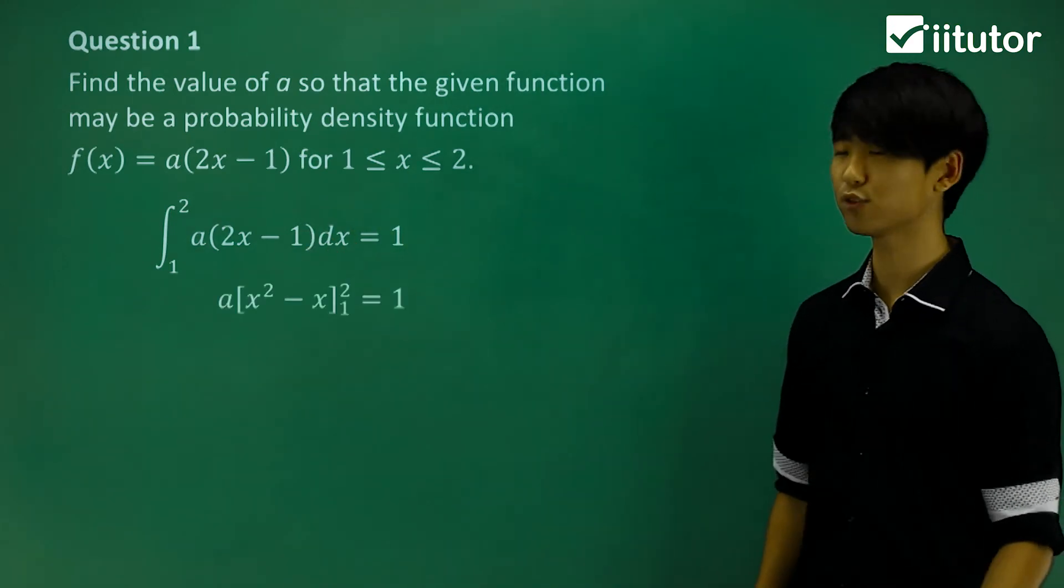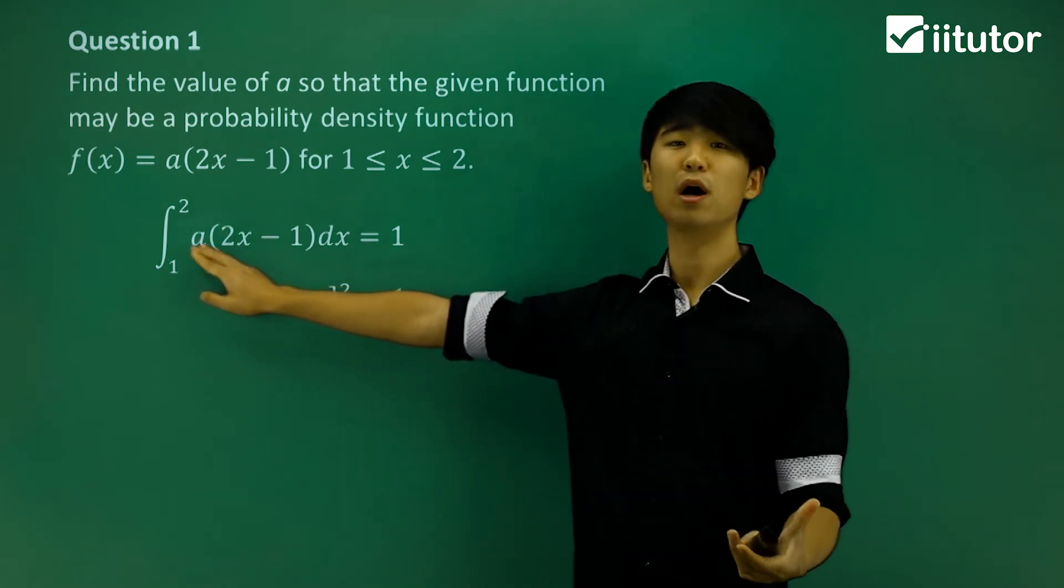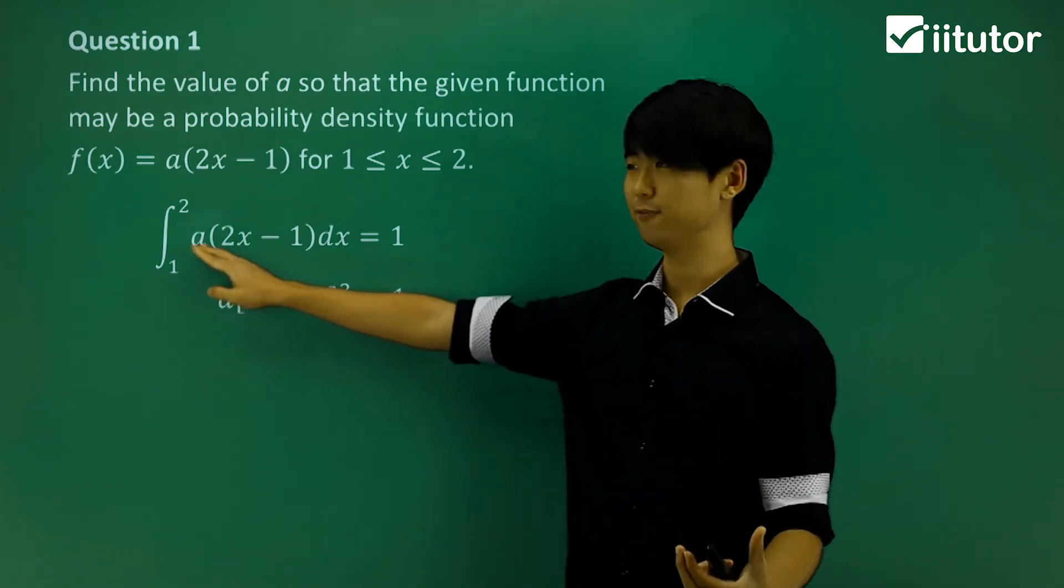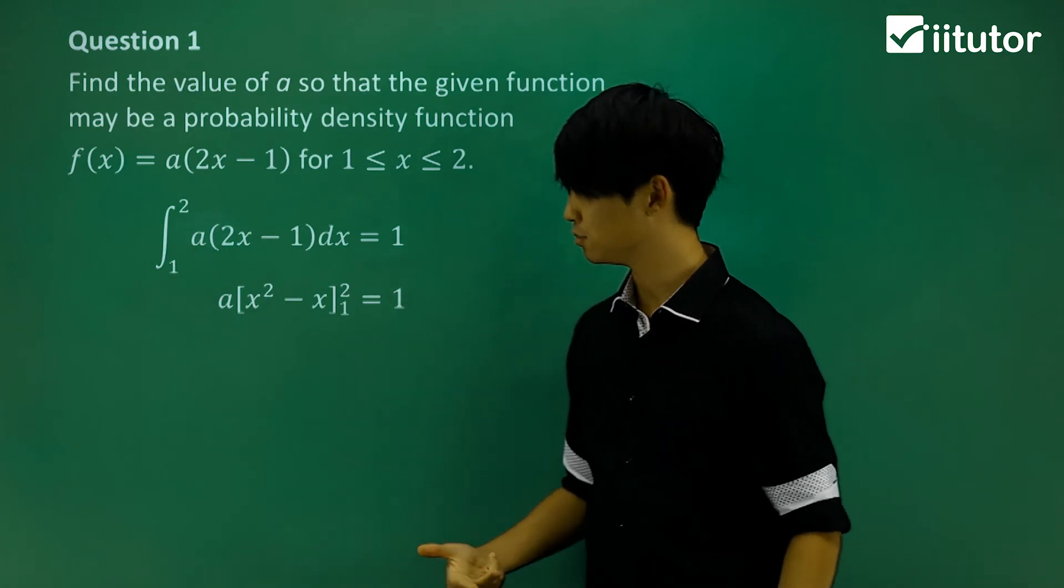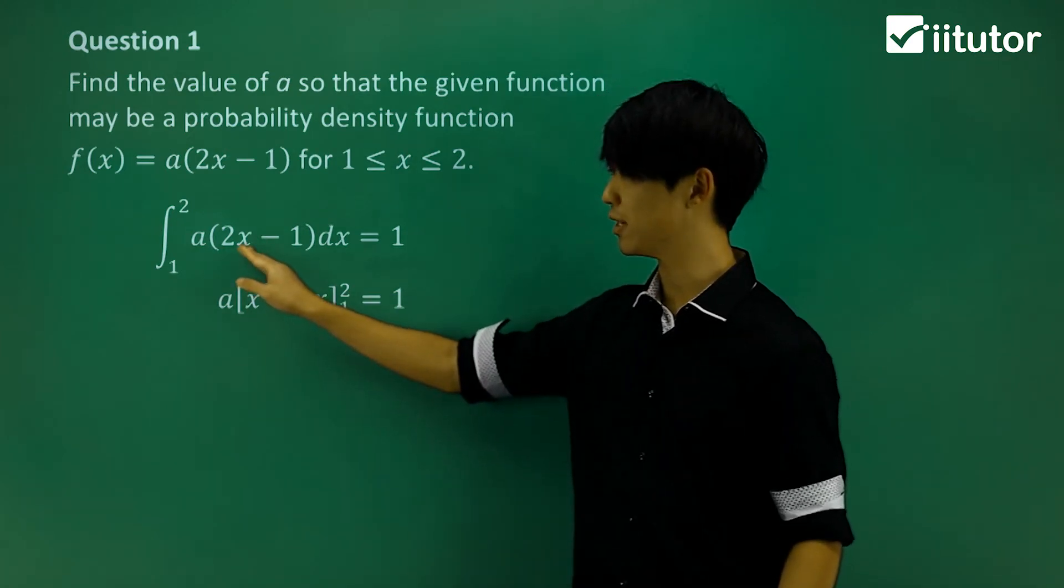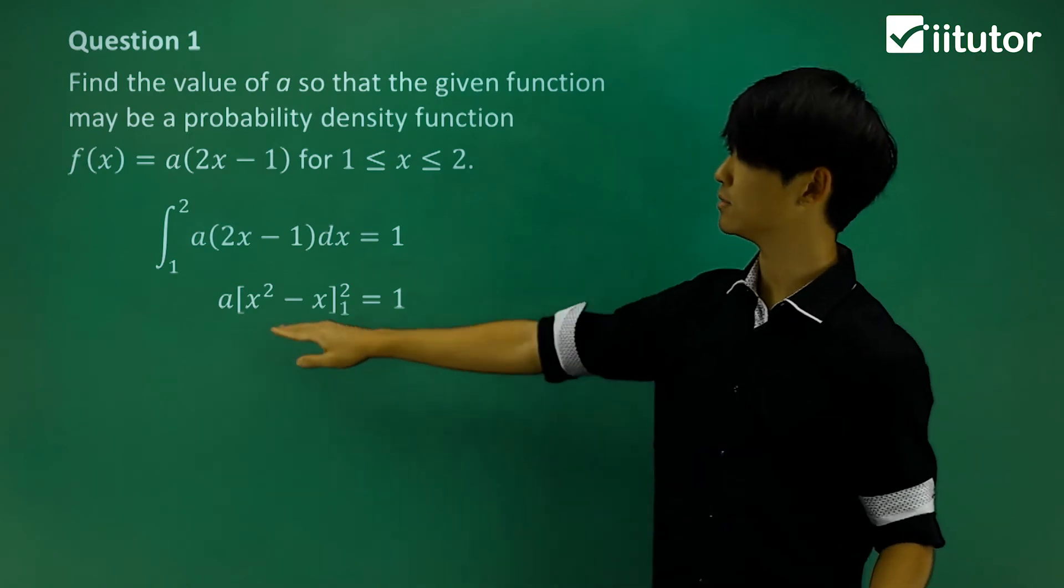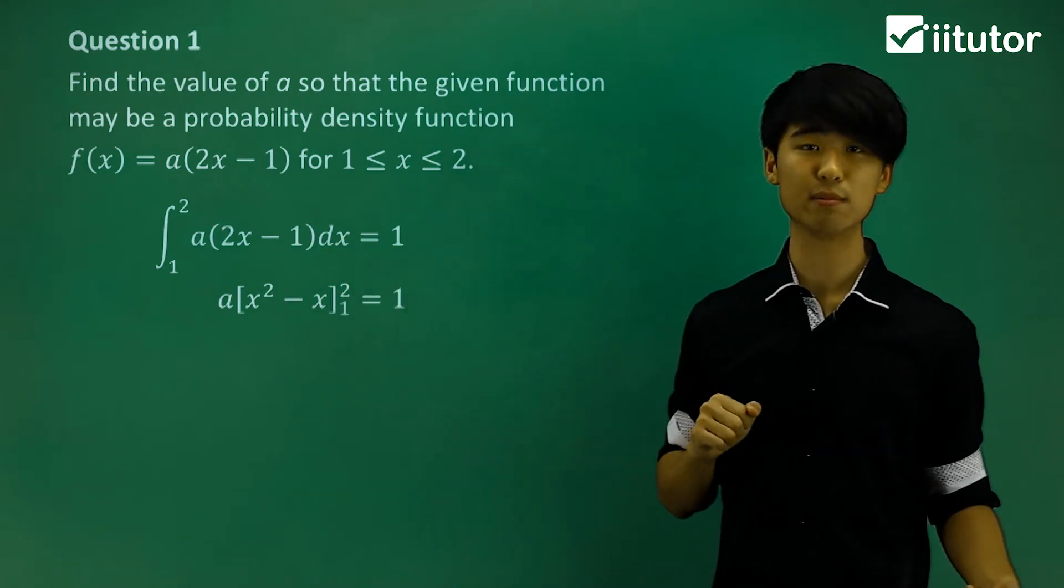So if I integrate both sides, a is a number, it's a constant, just some number, some value. It's not some pronumeral or anything, so we can just integrate it. So we can integrate 2x becomes x squared. If we integrate 1, it becomes x.